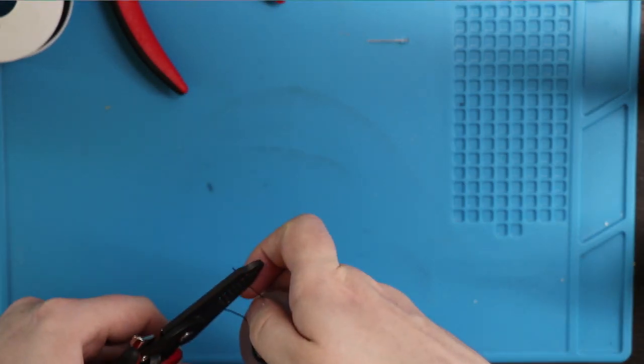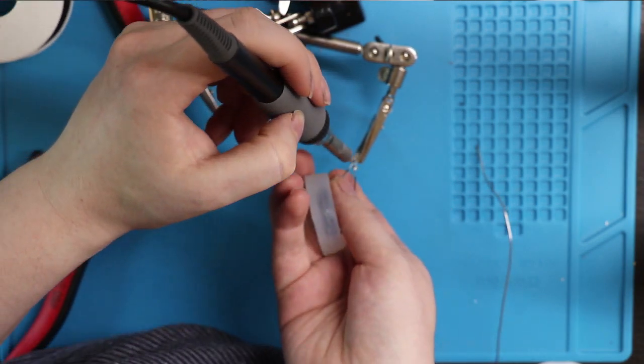Next, strip either end of the wire, solder each leg of the LED to either end of the coil.